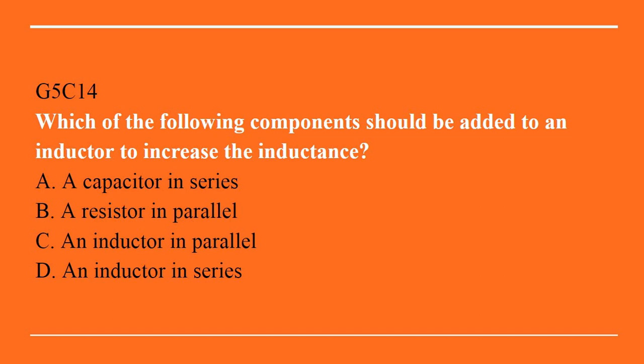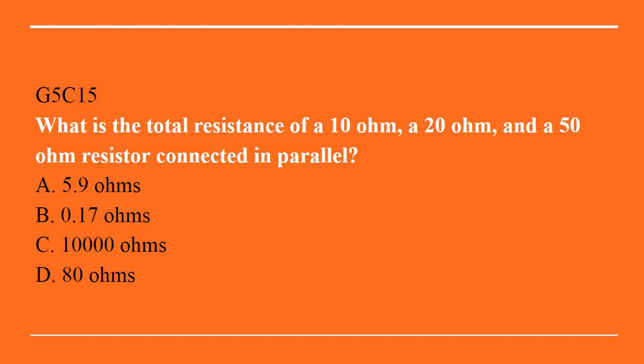G5C14: which of the following components should be added to an inductor to increase the inductance? A. A capacitor in series. B. A resistor in parallel. C. An inductor in parallel. Or D. An inductor in series. Correct answer is D: an inductor in series. G5C15: what is the total resistance of a 10 ohm, a 20 ohm, and a 50 ohm resistor connected in parallel? A. 5.9 ohms. B. 0.17 ohms. C. 10,000 ohms. Or D. 80 ohms. Answer is A: 5.9 ohms.